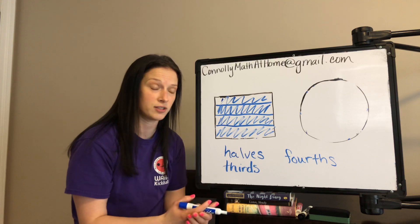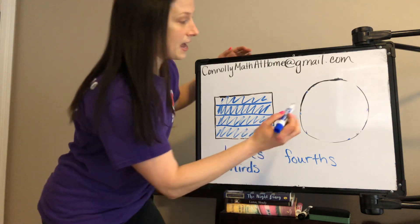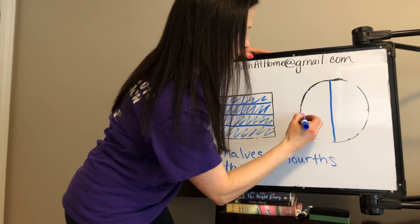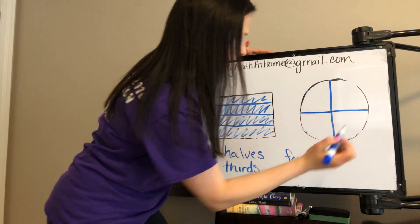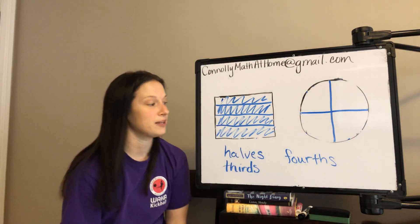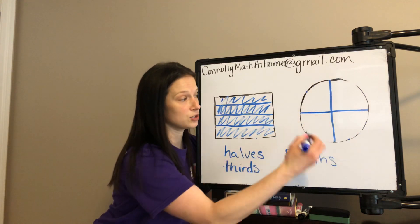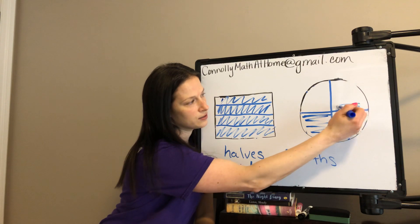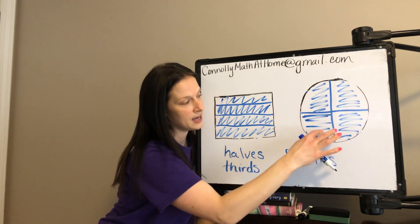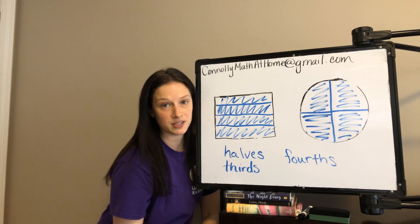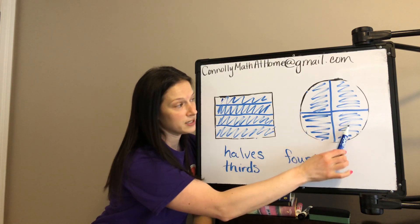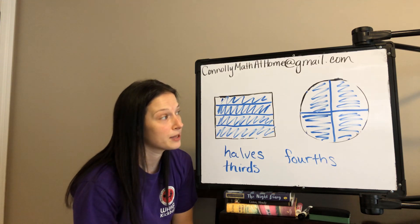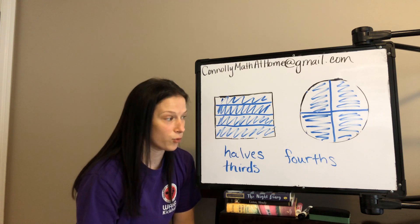On the circle, I can make fourths by going like this. How many fourths does it take to make this circle? One-fourth, two-fourths, three-fourths, four-fourths. As you can see from the representation, each piece is the same exact size, which means that we do, in fact, have fourths.